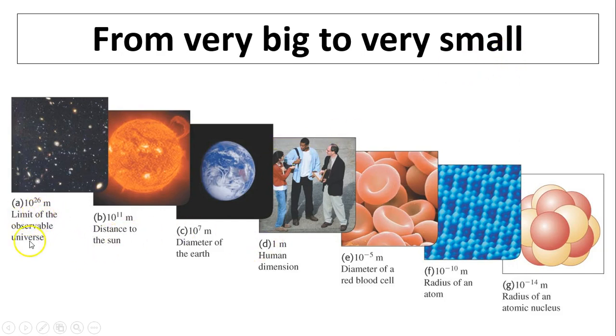Something very big is the limit of observable universe - it's 10 to the 26 meters, that's very, very big. To something very, very small, the size of atomic nucleus, that's 10 to the negative 14 meters. To express these quantities, we use scientific notation.